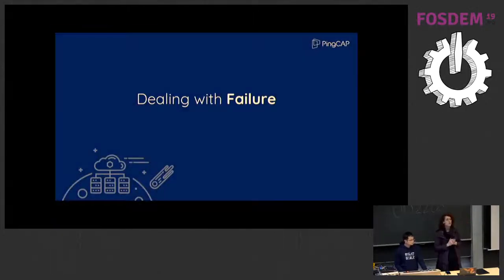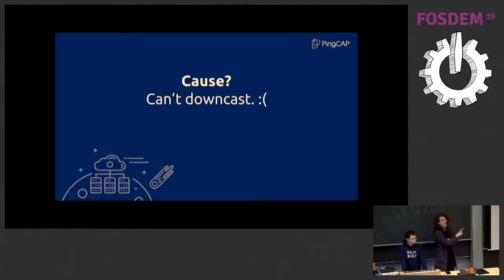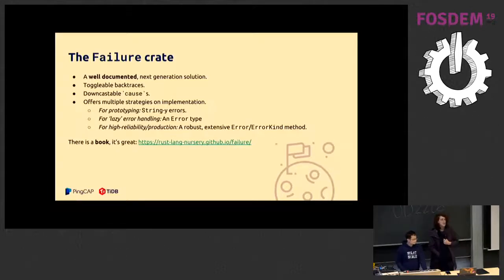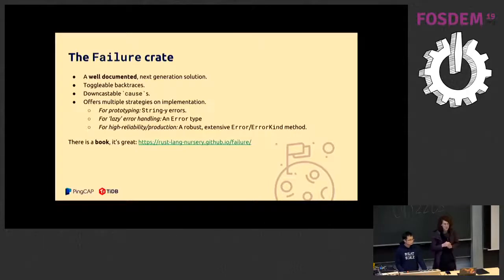A lot of people ask us how we deal with errors. We're doing some really complex things with errors and trying to move to using the failure crate, because we found the standard Error trait is a little insufficient. You can't downcast the cause of an error, and you also can't get backtraces. The failure crate allows you to have both. It describes four different ways of dealing with errors — three of which are good: the prototyping way passing around strings, the lazy way with a normal error type, and the error/error-kind method for high-reliability software.